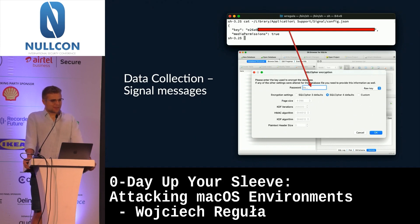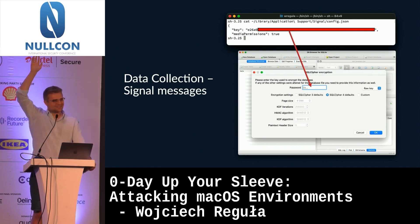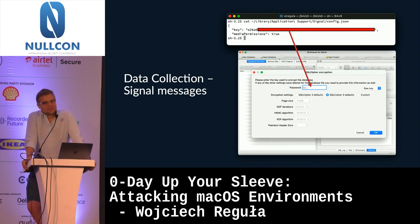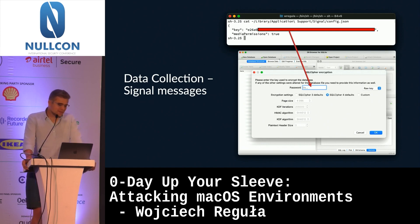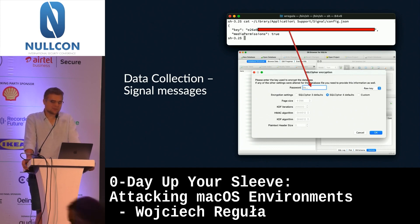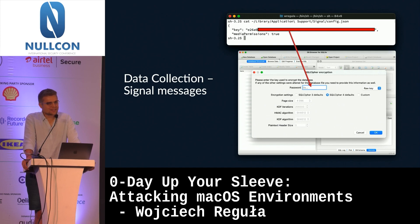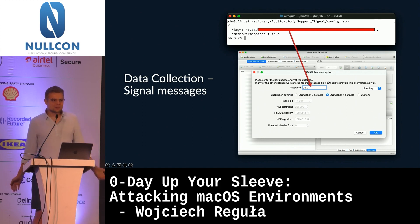Now let's attack Signal. Signal claims to protect data only in transit — they don't manage endpoint security. All messages on Mac are stored in an encrypted SQLite database, which is good. However, the decryption key is not stored in the keychain; it's stored in a flat file accessible by a standard user at `~/Library/Application Support/Signal/config.json`. Grab that key, pass it to the SQLite database, and all your messages are decrypted.